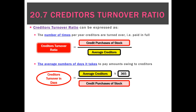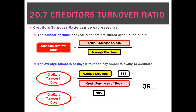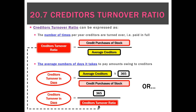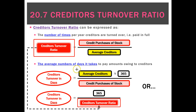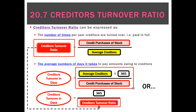One last way to calculate creditors turnover in days is used when we don't have all the information we need. We simply take 365 and divide it by the creditors turnover ratio — taking the number calculated above and putting it in the denominator — and that gives us the same result as the direct days calculation.